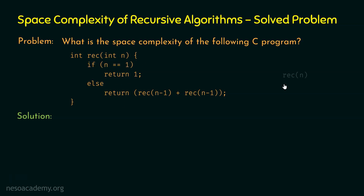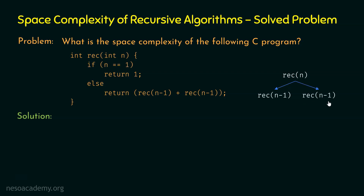Let's find the depth of recursion by observing the flow of recursive calls. For the first time, rec of n is called. I am assuming the else block will be executed and not the if block, because I want to know the flow of recursion. I am assuming n is much greater than 1, so this condition is not satisfied and the else block executes. Therefore, from rec of n, there will be two function calls: rec of n minus 1 and rec of n minus 1.